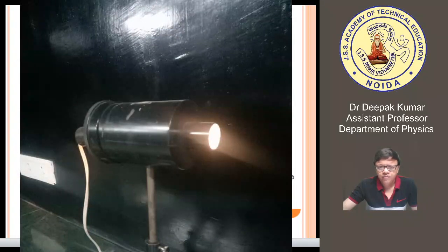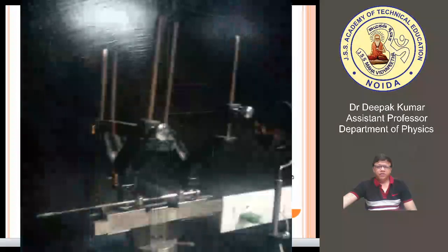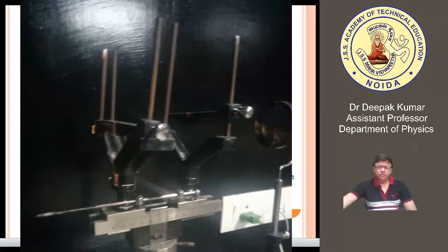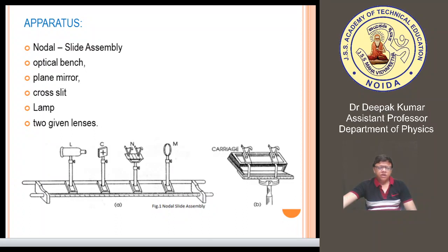This one is the light source, which is basically a tungsten bulb placed inside this bulb holder. With the help of this bulb you can pass light through this particular slit — this is the cross slit. This cross slit then passes the light through the nodal slide assembly, which consists of two holders where we can mount the two different lenses. Finally, the last part of this system is the plane mirror, which is used to reflect the light back to the system so that an image can be obtained on the screen.